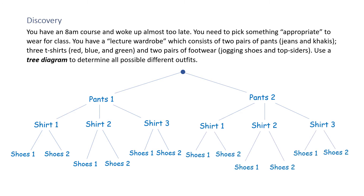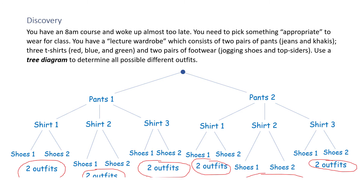Now look at what you have. If you picked Pants 1, Shirt 1, and two pairs of shoes, you've got two outfits. Same thing if you pick Pants 1, Shirt 2, and two pairs of shoes — two outfits. Pants 1, Shirt 3, and two pairs of shoes — another two outfits. Same thing if you started with Pants 2. You've got two outfits, two outfits, two outfits, two outfits, two outfits, two outfits — for a total of 12 different outfits. This is how you use a tree diagram.